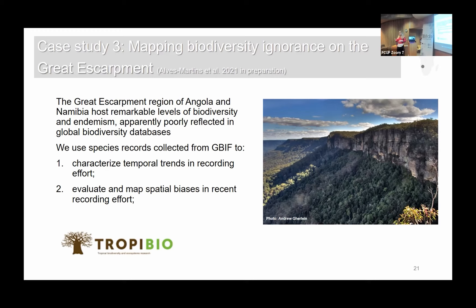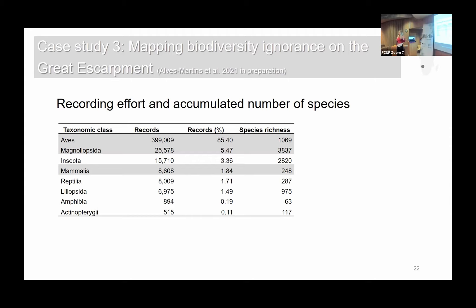Our objectives were to characterize the temporal trends in recording effort in the great scarpments of Angola and Namibia, and to evaluate and map the spatial bias in recent records. Looking at the data downloaded and cleaned from GBIF, we found a heavy bias toward birds — people go to the great scarpments mainly to study birds, and then flowering plants, insects, and mammals. In this chapter we will focus on birds, flowering plants, and mammals.